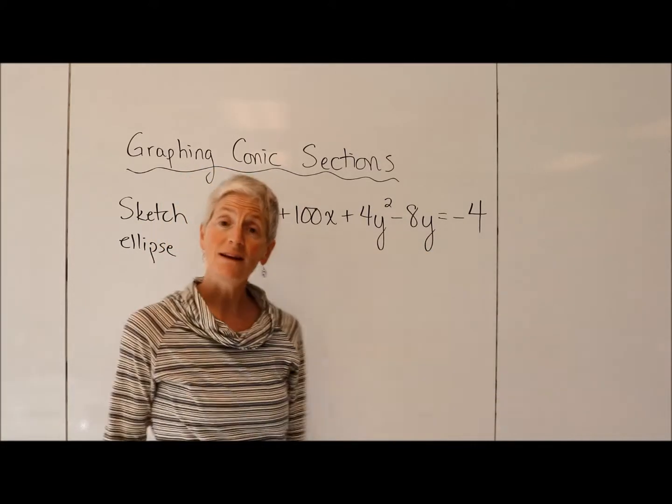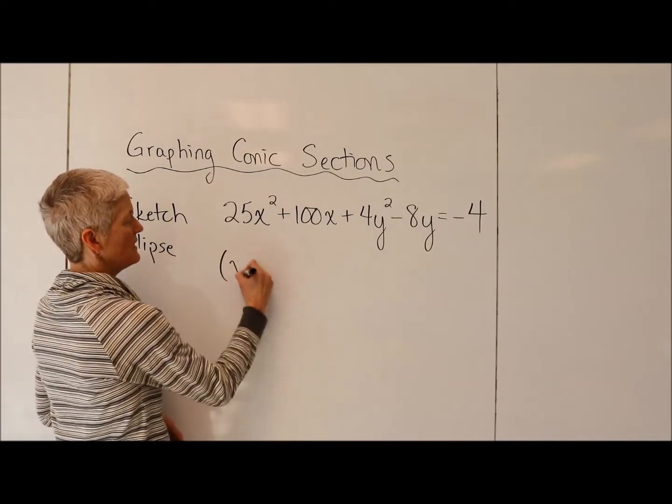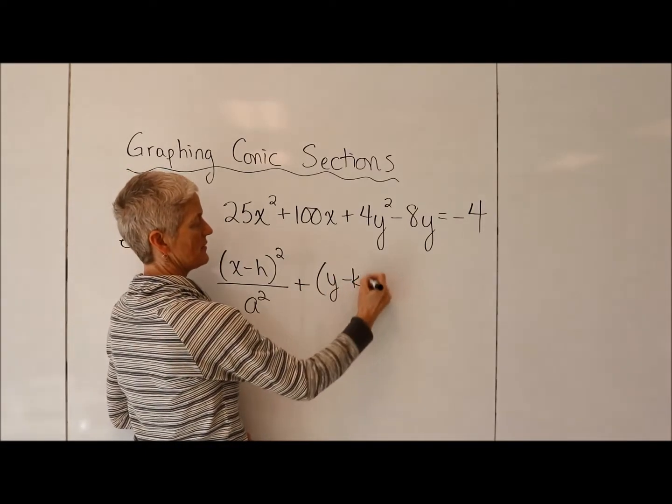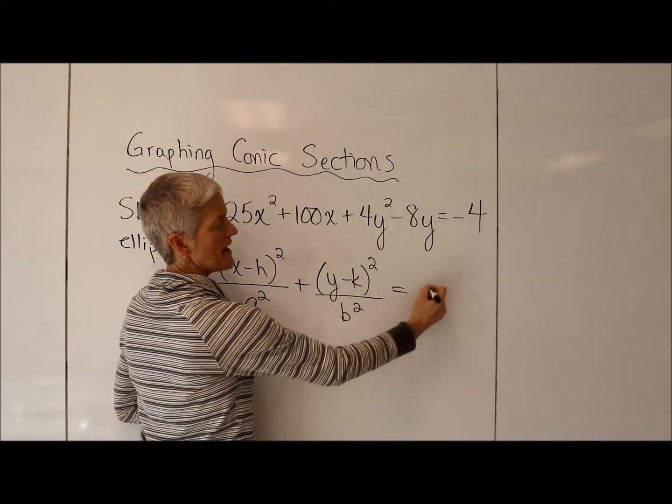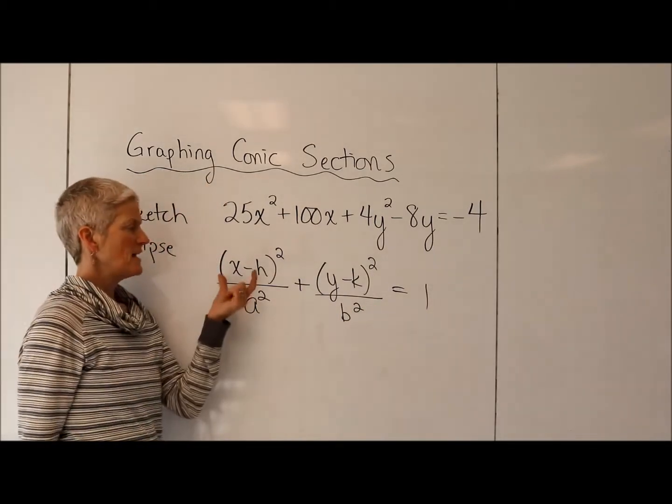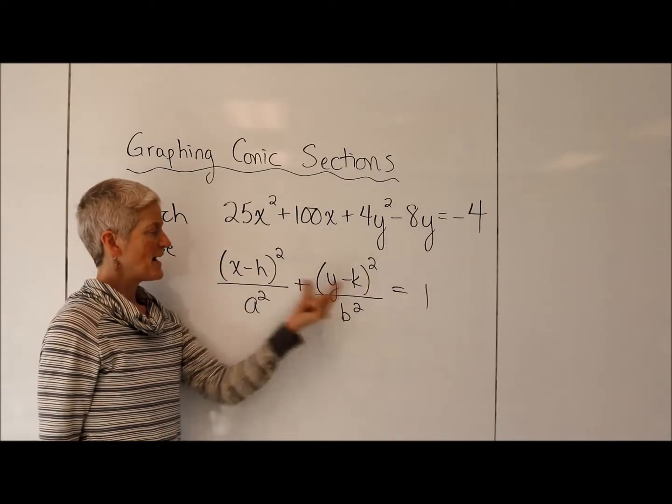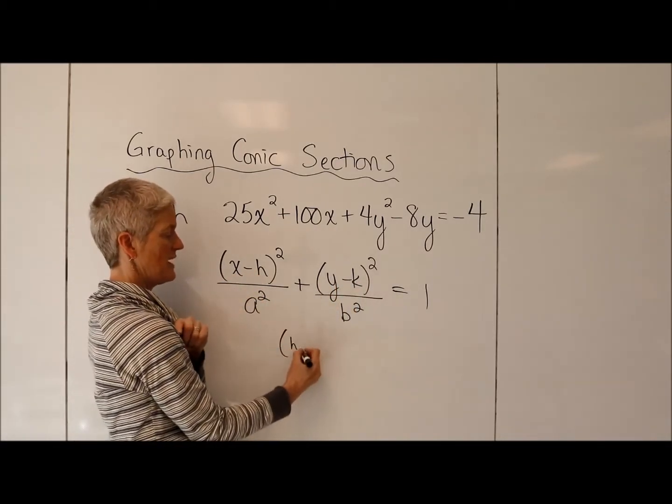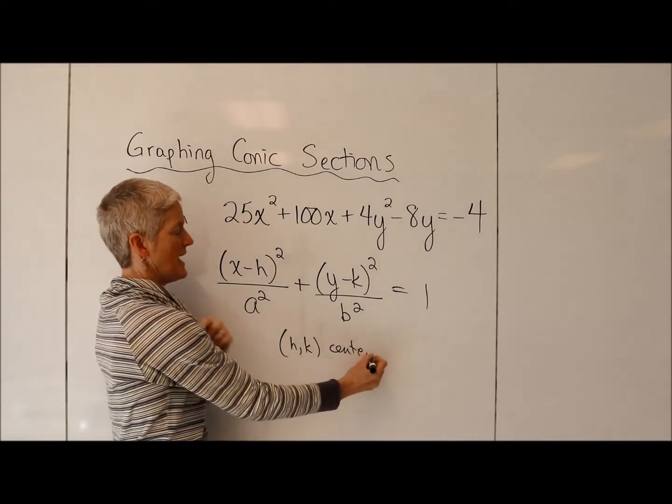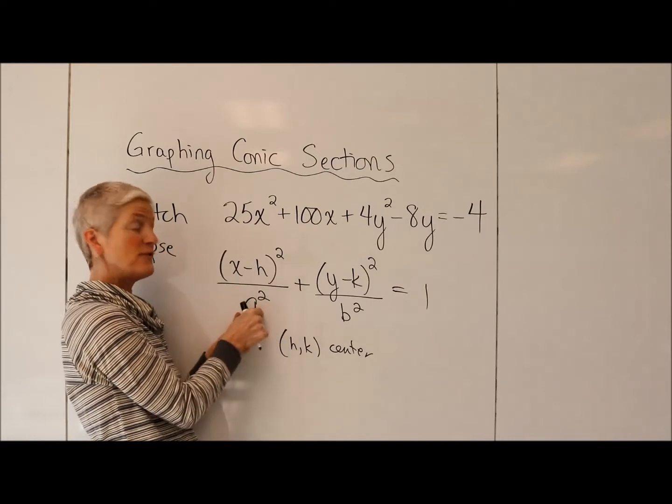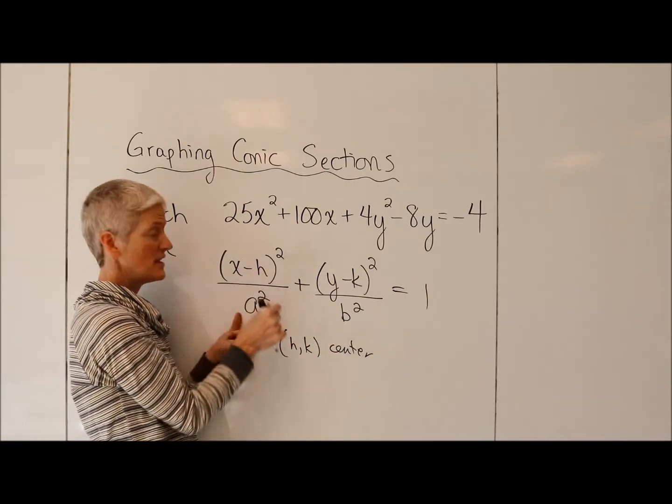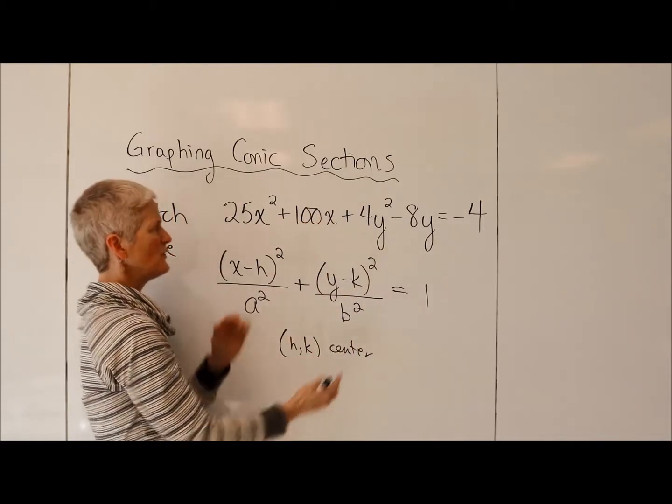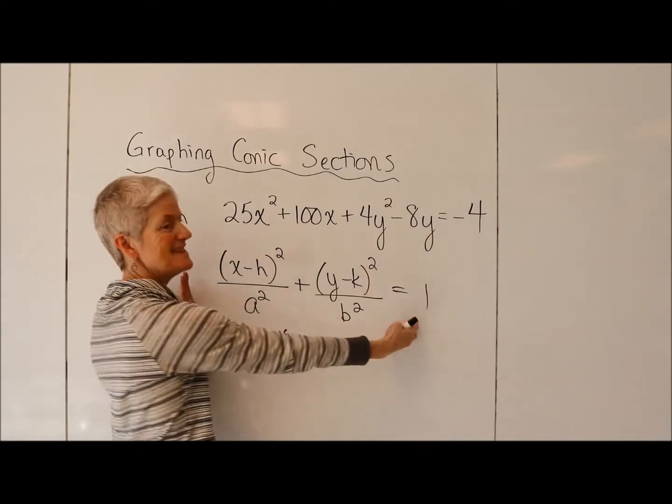But we often like to rewrite it in a form that makes it easier to graph. And if you recall, the form that makes it easier to graph is this form, where we have a constant of one over there, and we have these beautifully factored binomials here. That gives me the center of the ellipse. HK is the center of the ellipse. And A is my displacement, how far I go right and left from the center. And B shows me my displacement, how far I go up and down from the center. So I somehow want to transform this creature into this creature.